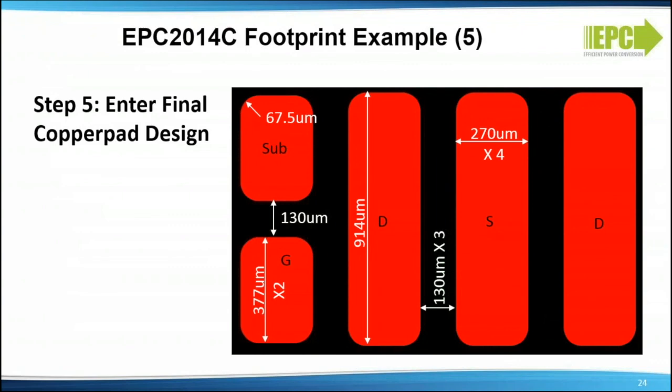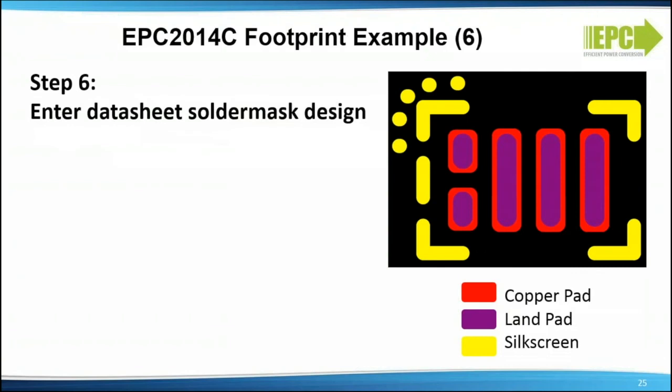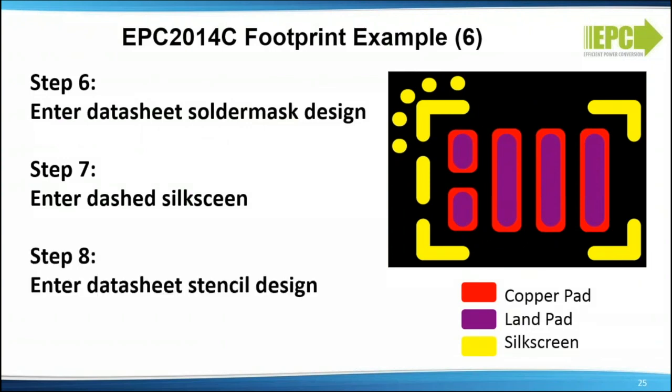Step 5: enter final copper pad design. By making a drawing, you will make it easy to enter the pad sizes into your PCB CAD system for all of the pins. Step 6: enter the datasheet solder mask design. Step 7: enter dashed silkscreen. Step 8: enter the datasheet stencil design. The finished footprint is shown — this completes the footprint design.